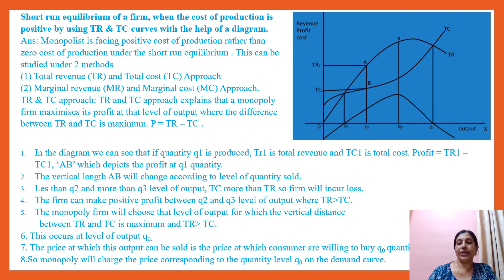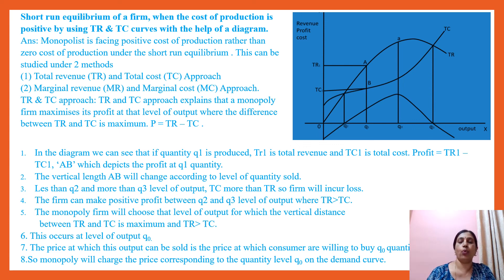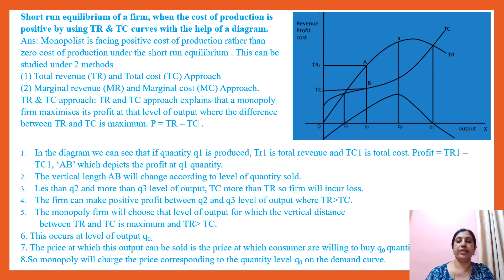As I told, this topic is important for 6 marks. Along with the diagram, write the introduction and meaning of the TRTC approach, then the diagrammatic explanation. If you write this much, you can easily get 6 out of 6. Be very careful while drawing the diagram — observe the shapes of TR and TC, and draw the profit line properly. At Q2 and Q3 it must cut the x-axis since profit is zero, and less than Q2 and more than Q3 it must be in the negative zone.